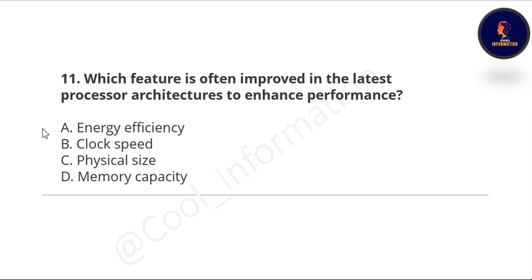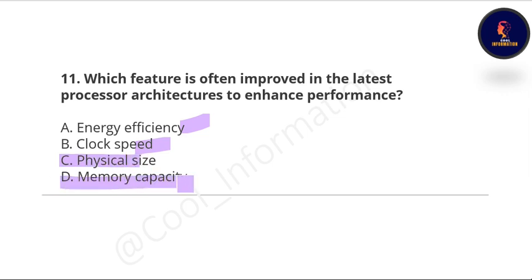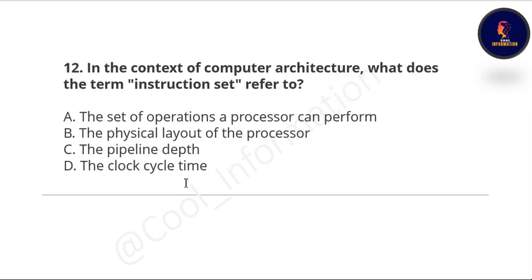Next question: which feature is often improved in the latest processor architecture to enhance performance? Options are: energy efficiency, clock speed, physical size, or memory capacity. The correct option is B — clock speed.